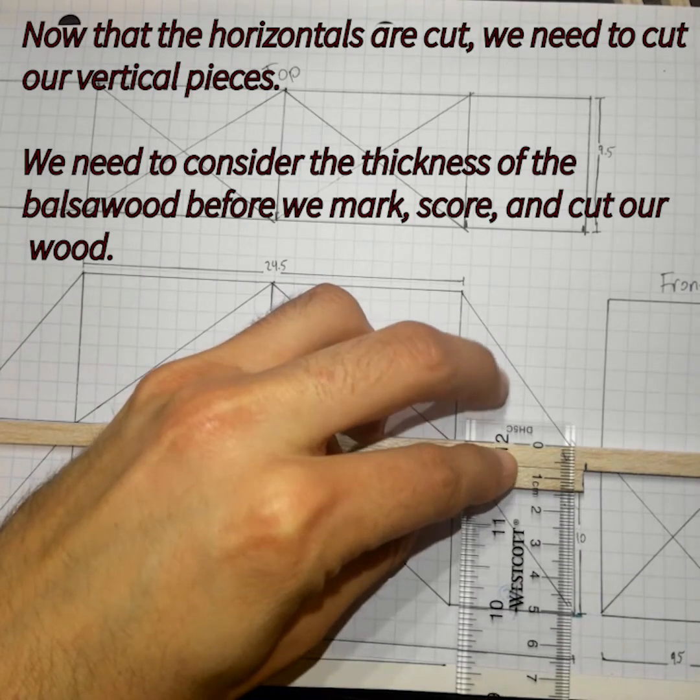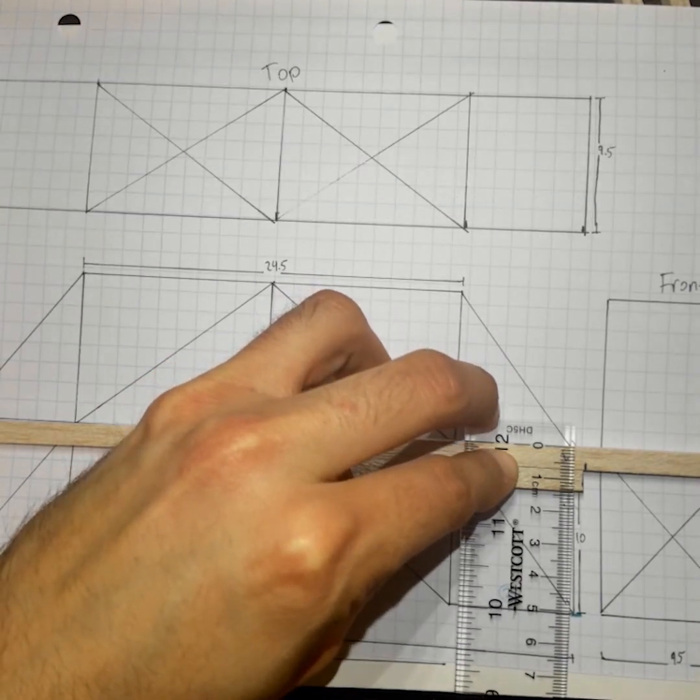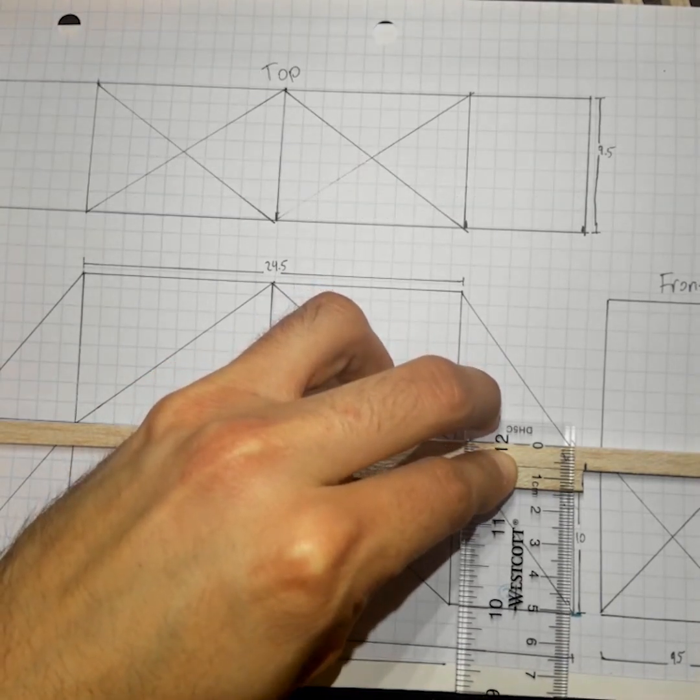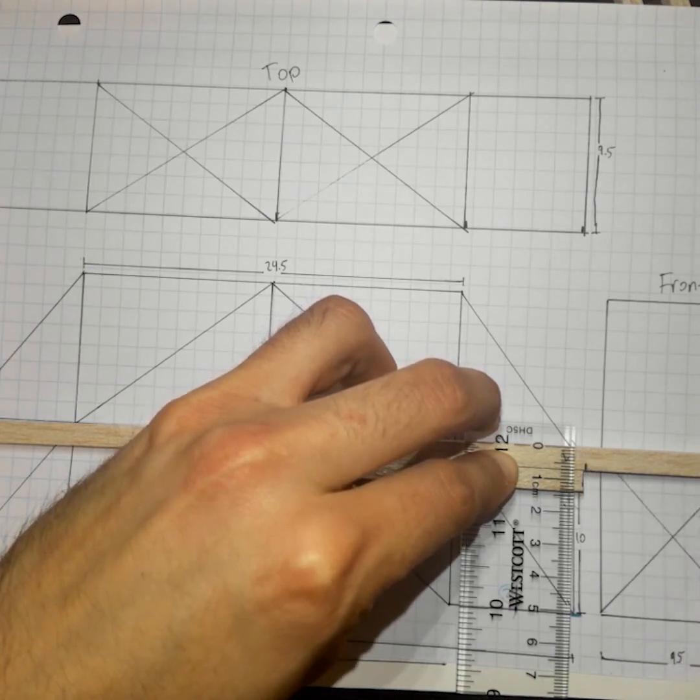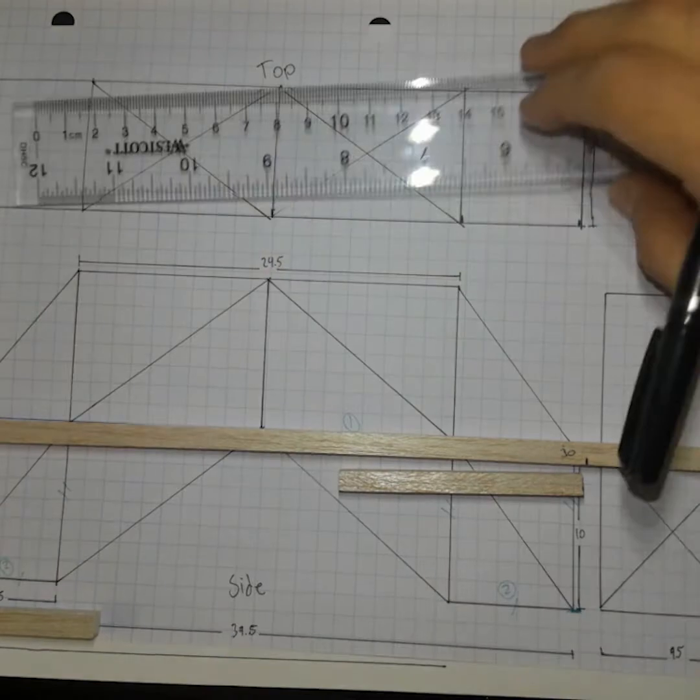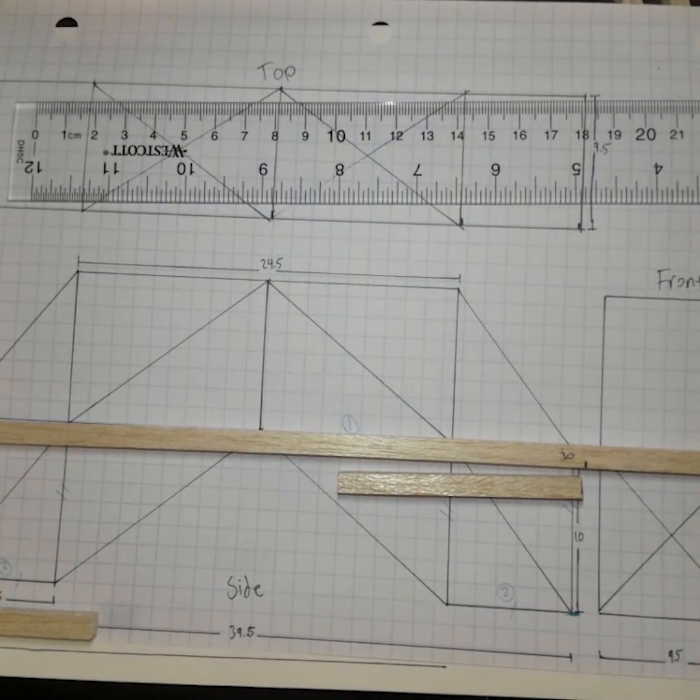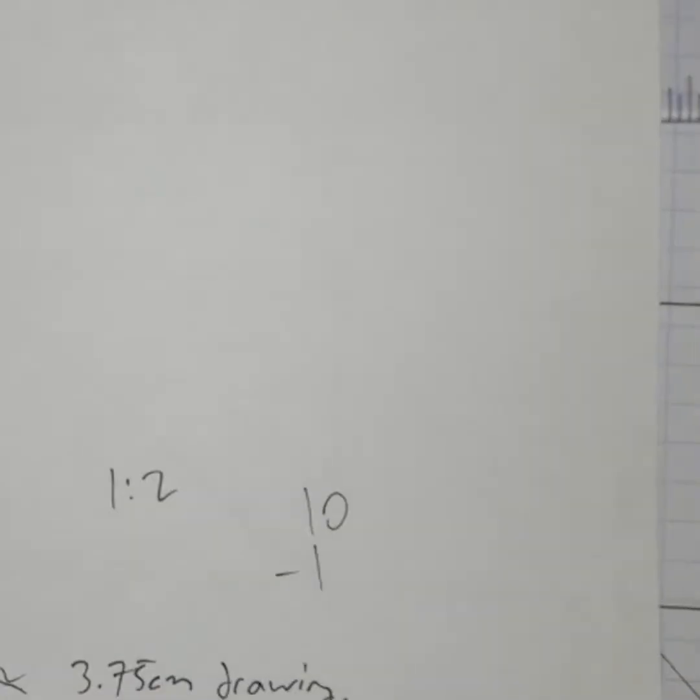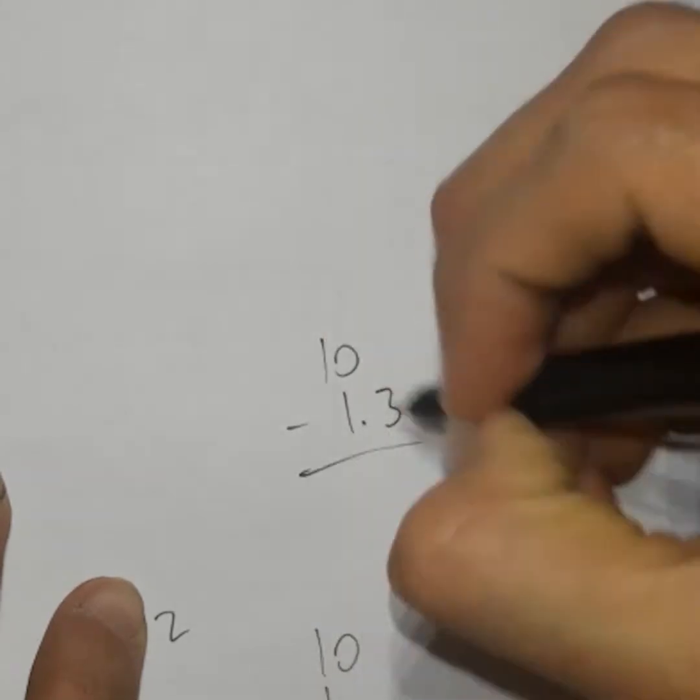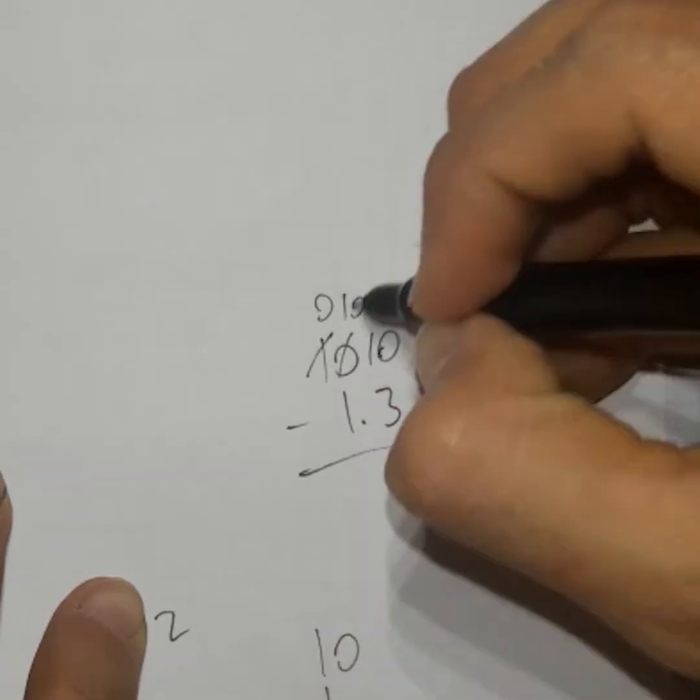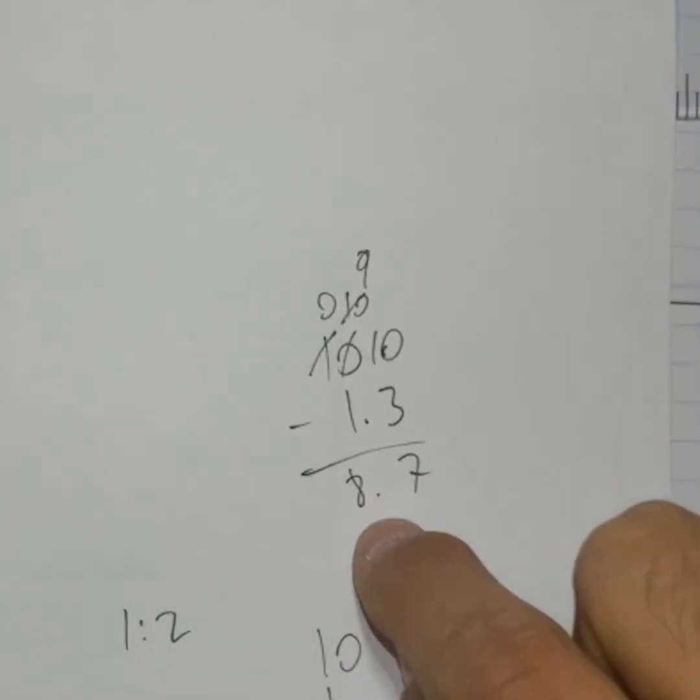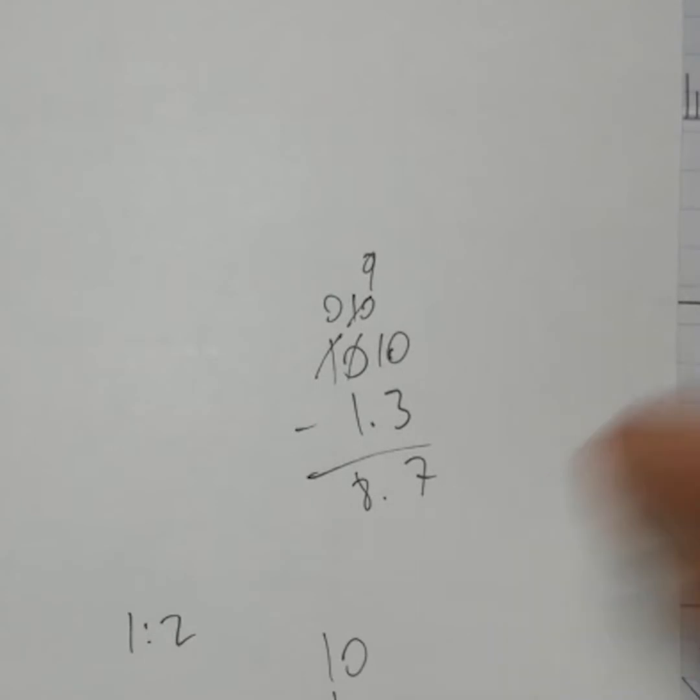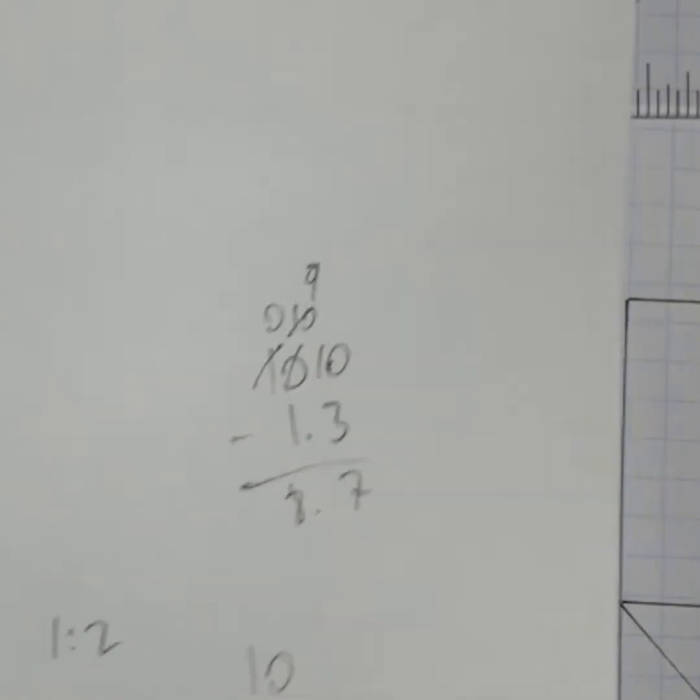So I'm going to measure this out, and it comes out to about 1.3 centimeters if I combine these two pieces, so with that said, we need to factor that in for our other piece. So now I need four vertical pieces that each have a height of 8.7 or a length of 8.7. So let's start cutting.